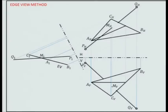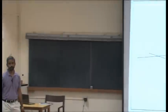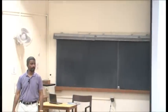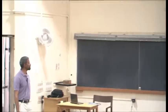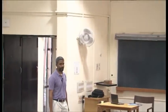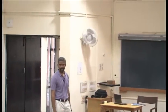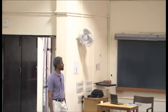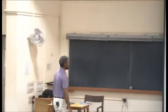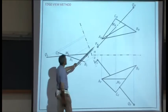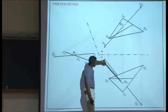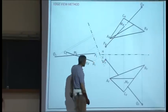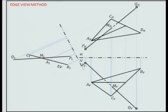The line is closer to the viewer, so the plane is behind the line and therefore that part is dotted. This part is solid, so the other part has to be hidden and the remaining part has to be solid.